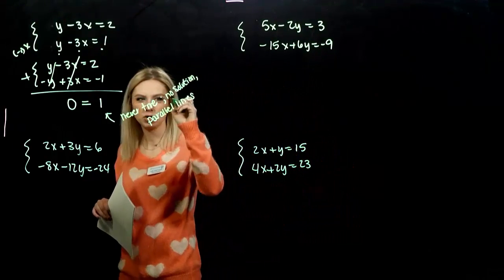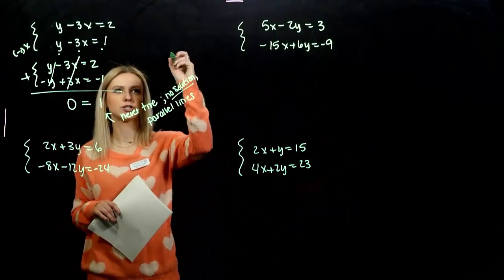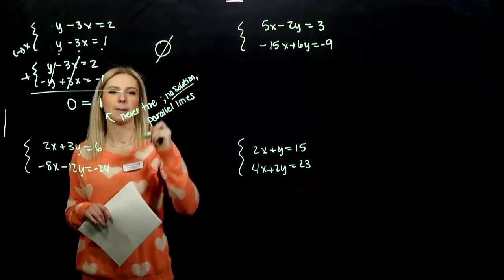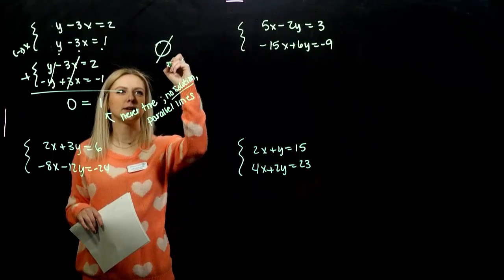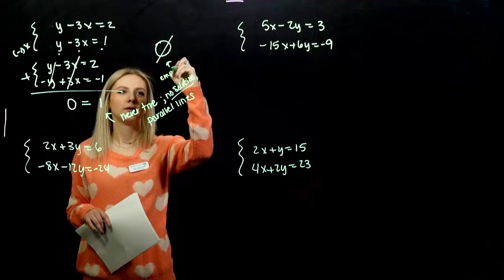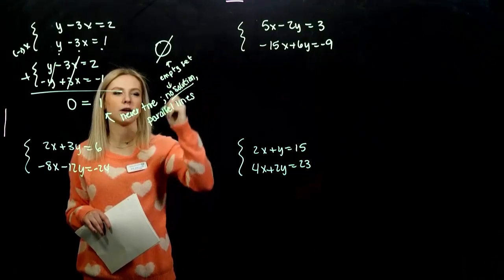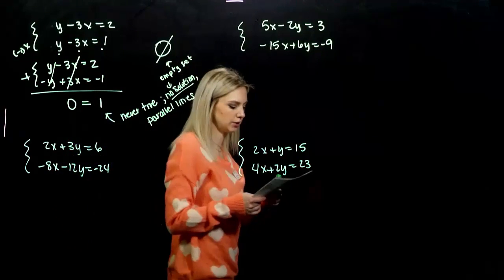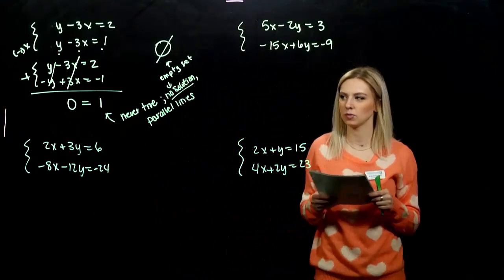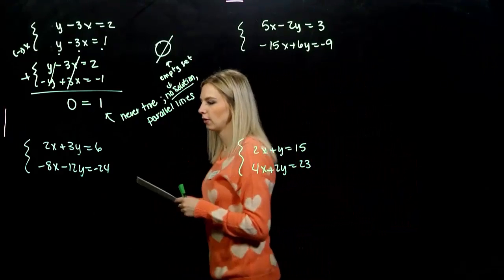So, when we have no solution, the set notation for that is the empty set. The set containing nothing. That's what we write when we say no solution. Nothing will make it true.